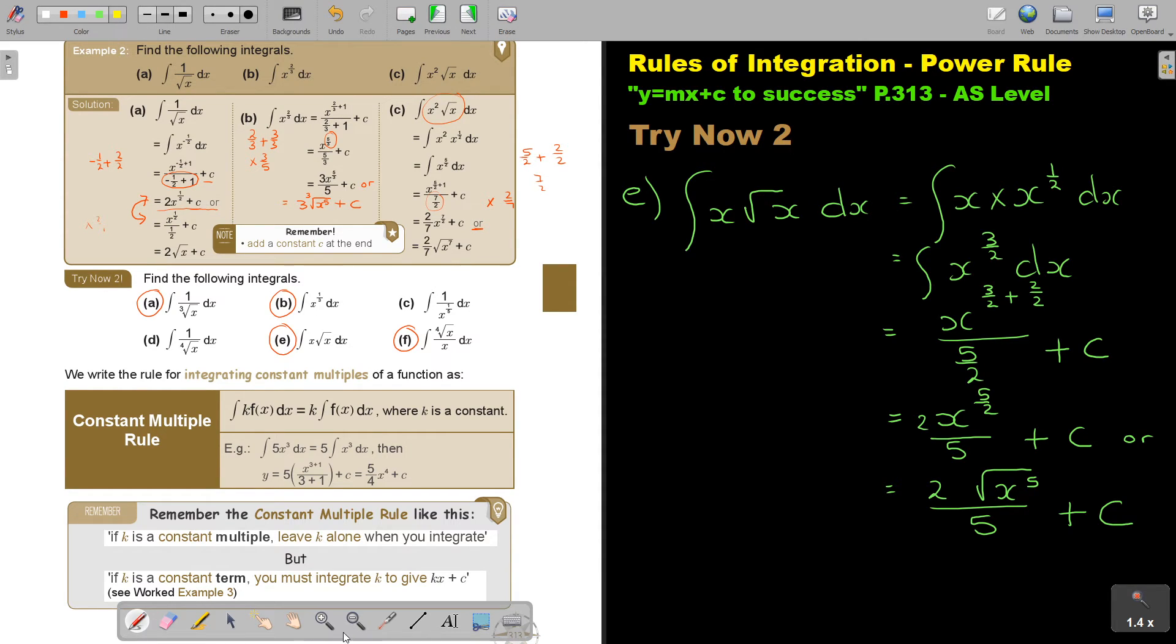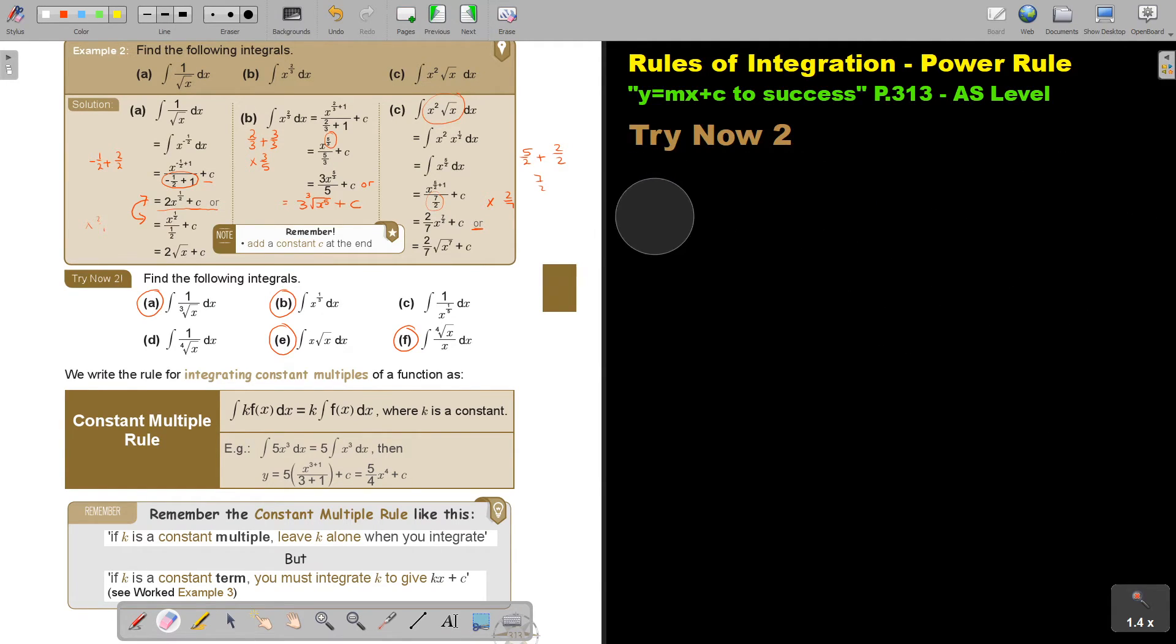And then the last one, number f. x4 over x dx. So it's x, it's a quarter, because there's 1 over x, that's 1. And it's dx. Don't forget, always, the way of writing, especially in this formal mathematics, very important. So this is going to be x. Then it's a quarter minus 1. It's actually a quarter minus 1, which is 4 over 4 dx. x, which is actually, x minus 3 quarters.